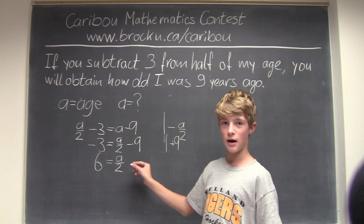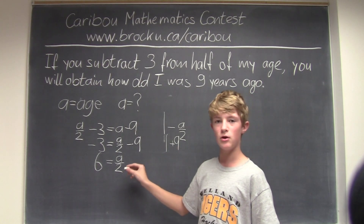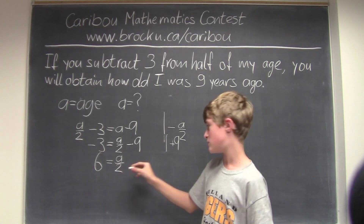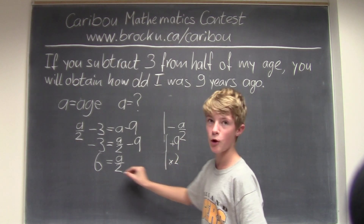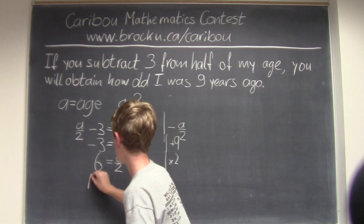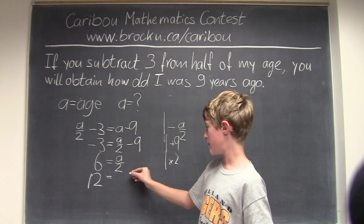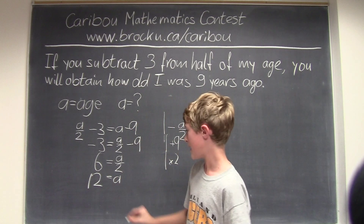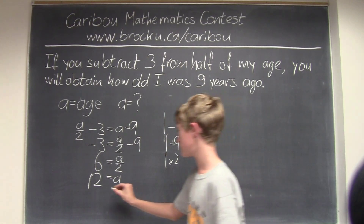That's not the final answer yet. We still have to multiply by 2, because we have A divided by 2. So it would be times 2 on both sides. On this side it would be 12, and on the other side it would just be A. So the age right now is 12 years old.